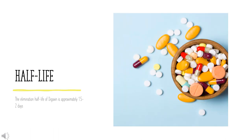Digoxin has a half-life of 1.5 to 2 days in healthy subjects. The half-life in patients who do not pass urine, usually due to renal failure, is prolonged to 3.5 to 5 days. Since most of the drug is distributed extravascularly, dialysis and exchange transfusion are not optimal methods for the removal of digoxin.